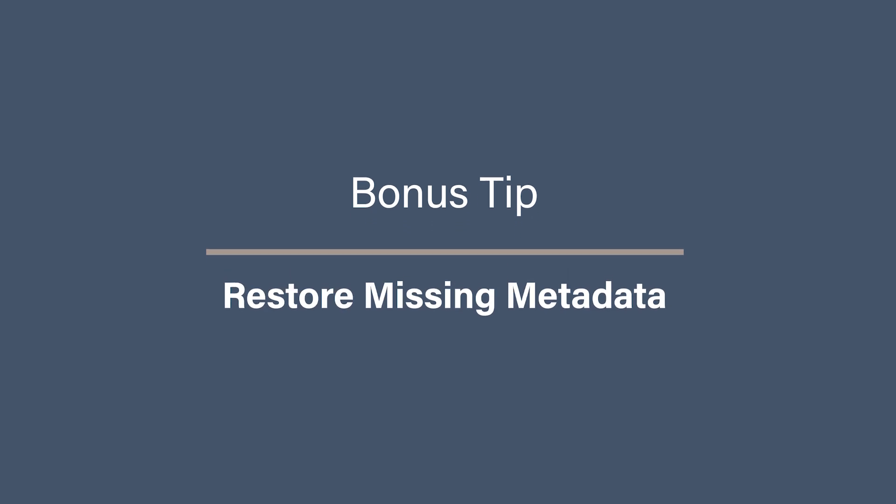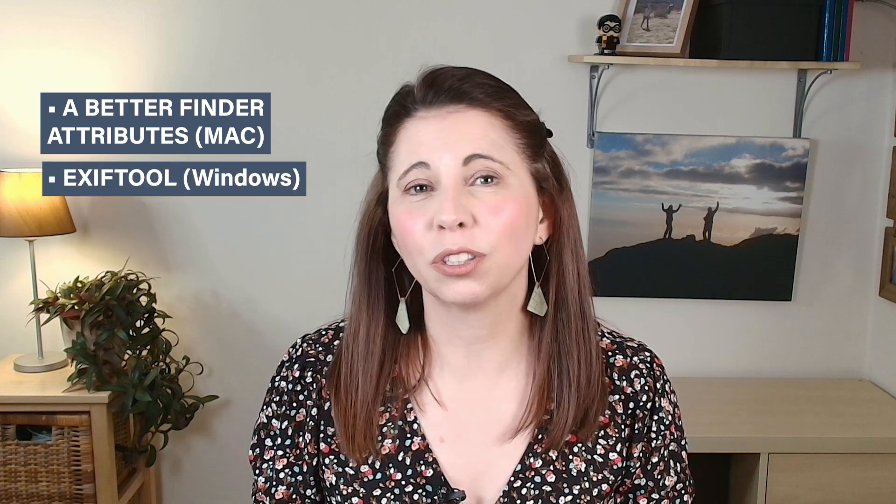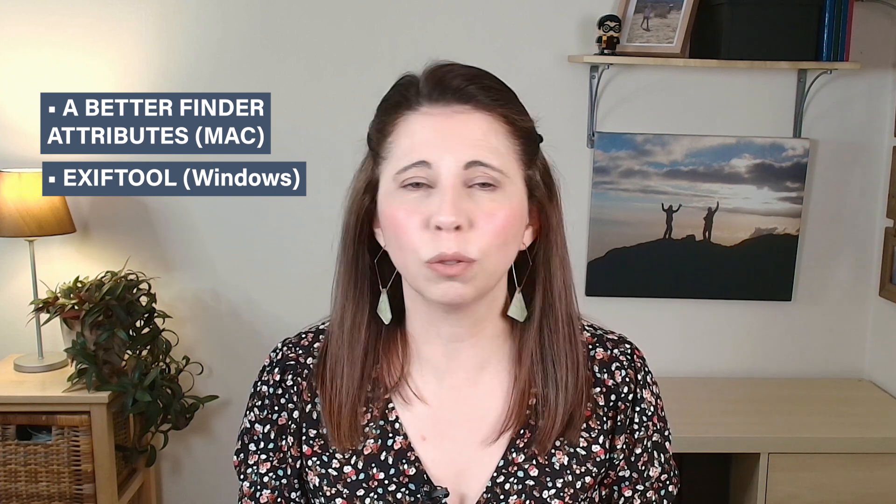Bonus tip: restore missing metadata if it's already lost. What if you've already transferred the photos and lost the metadata? Don't panic — there are some ways to get some of it back. For date and time issues, use Better Find Attributes for Mac or the EXIF tool for Windows to manually correct timestamps; you can also find hidden dates still in the data. For location data, if the GPS metadata was stripped, try using Google Maps' timeline to check where you were on that date, or use Adobe Bridge to add the location data back onto the files.